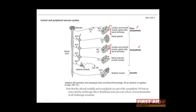The autonomic nervous system has what can be called a two-neuron system, and both the parasympathetic and sympathetic divisions follow this general rule. The first neuron has its soma in the central nervous system — that is, the spinal cord — and extends its axon to reach what is known as a ganglion. There, neuron number one synapses with neuron number two, which has its soma in the ganglion and then extends its axon to reach target tissues.